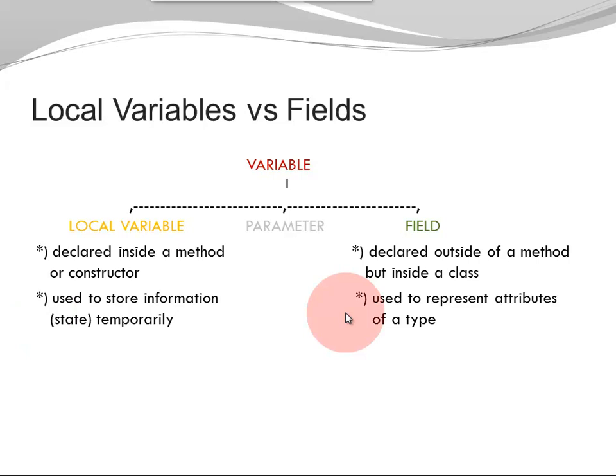Fields are used to represent attributes of a type, and the availability is independent of method calls or code blocks and their termination. So you can call methods multiple times. They can terminate multiple times. This does not affect the availability of your fields.